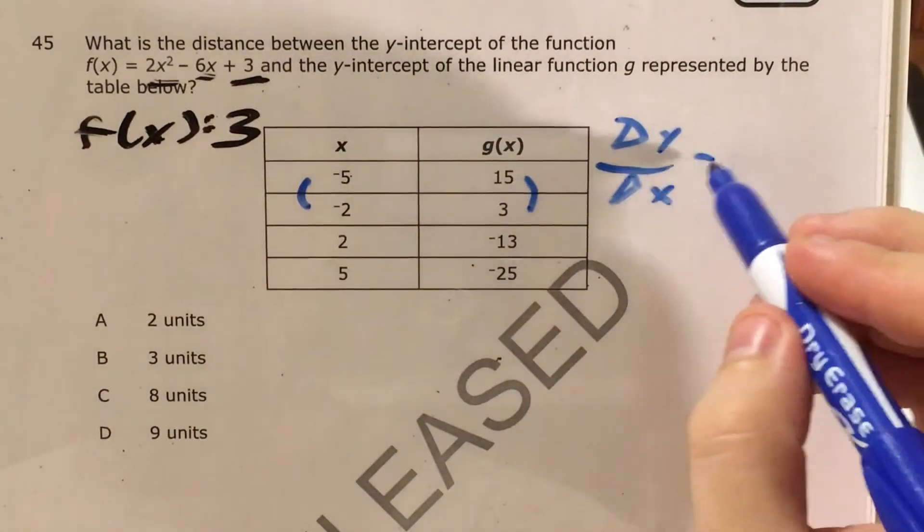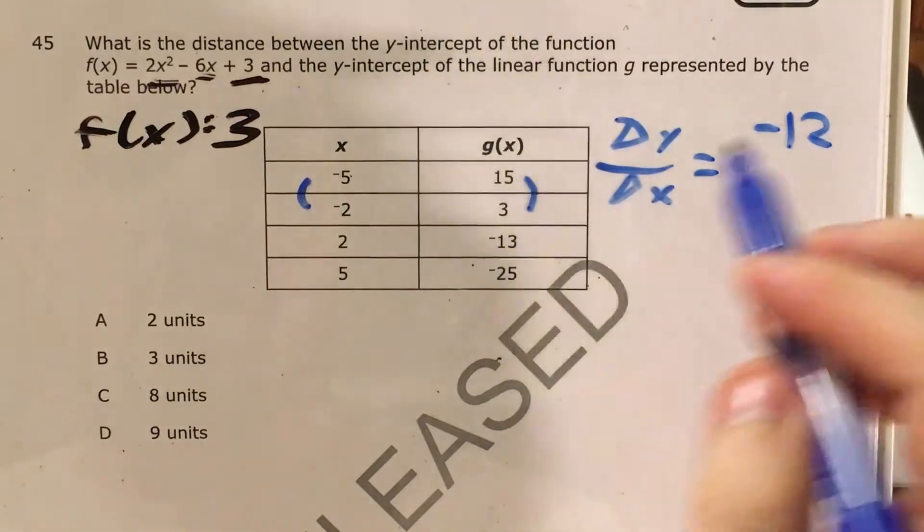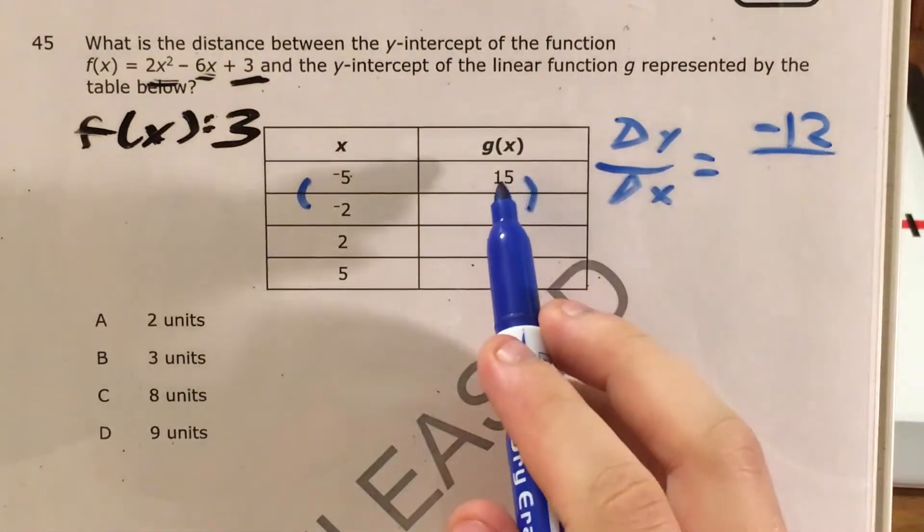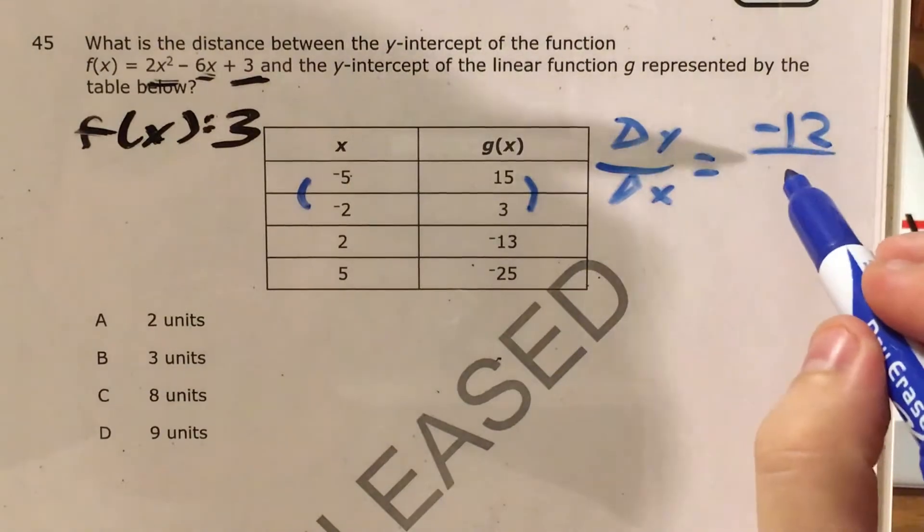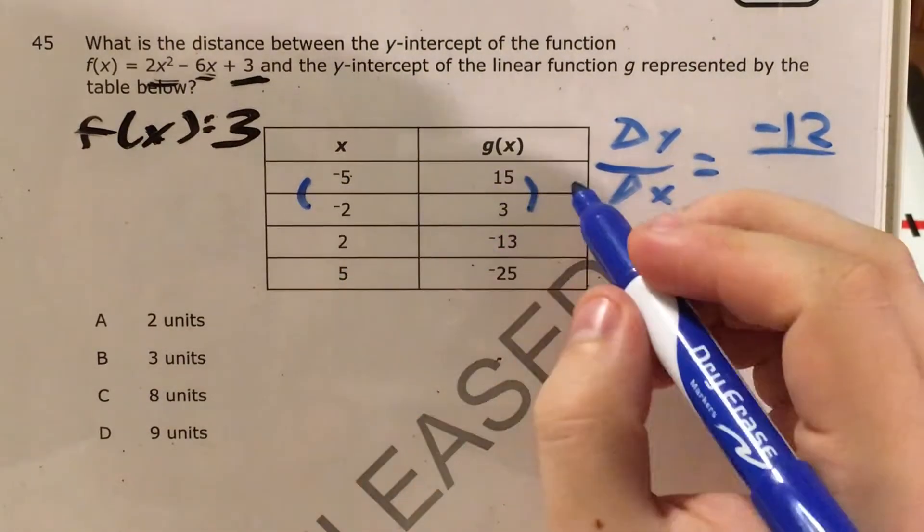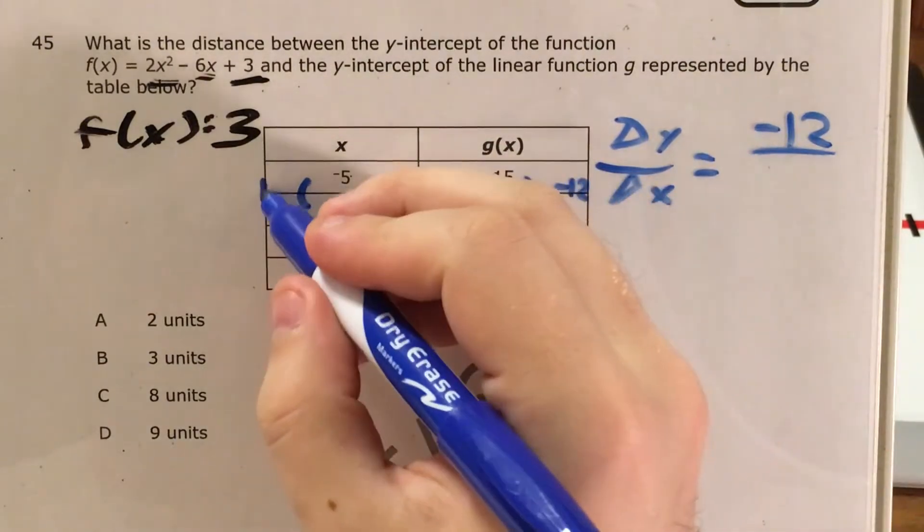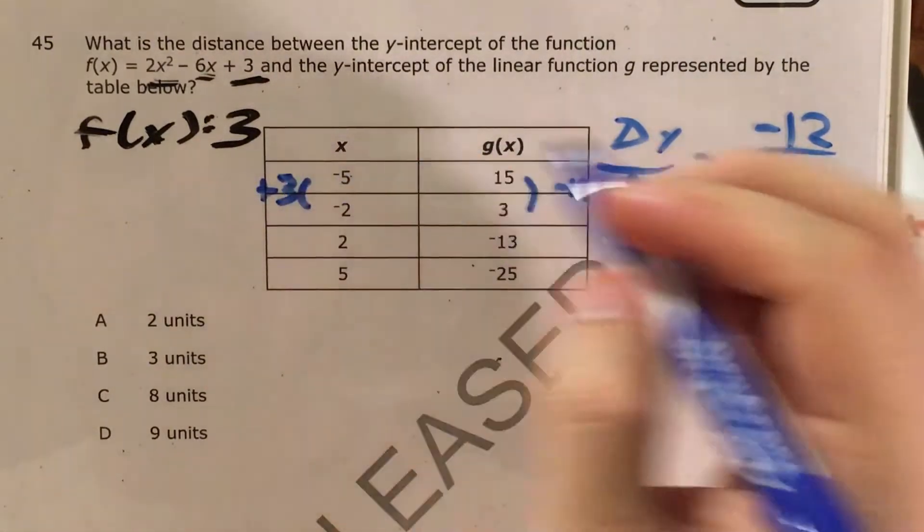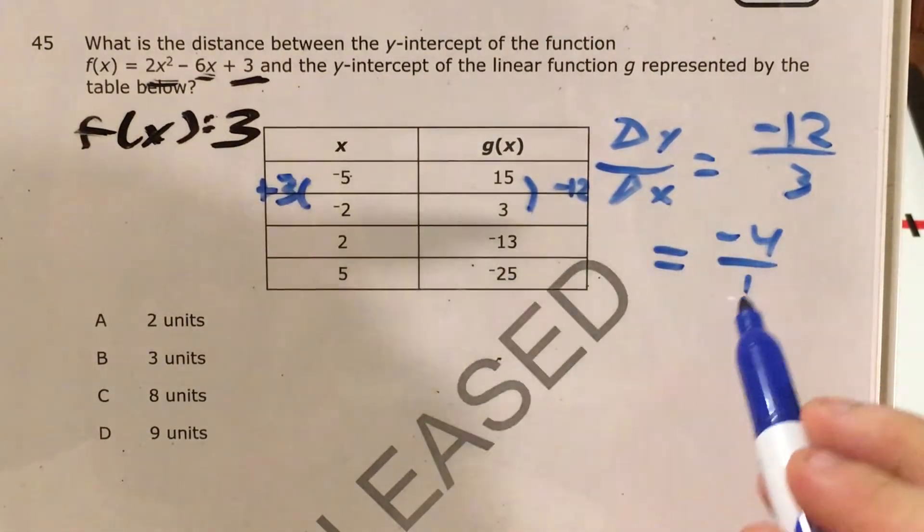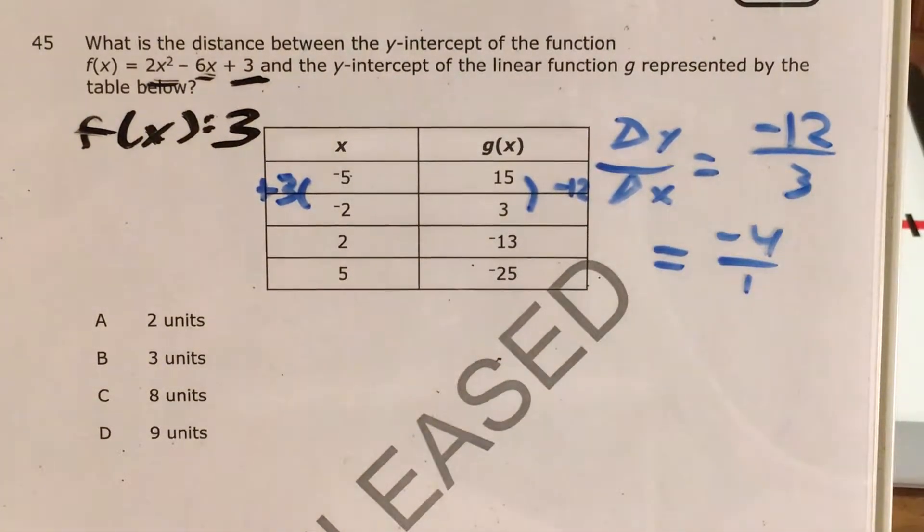my change in y is -12, because as I went from x = -5 to x = -2, I went down 12 units. From -5 to -2, that's adding 3. So the slope is -12 divided by 3, which equals -4.